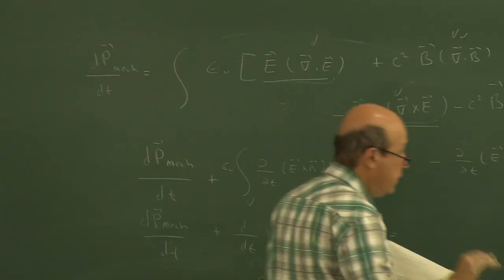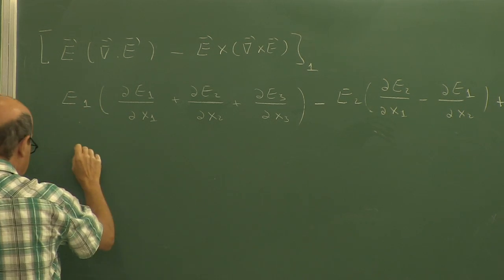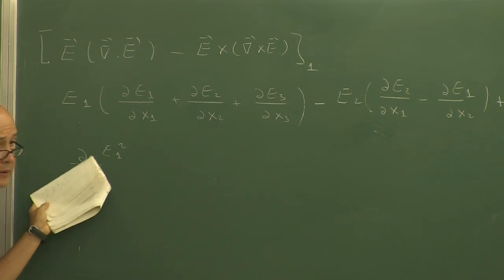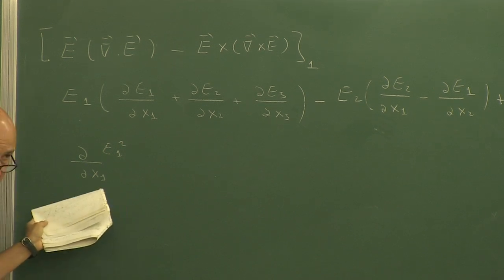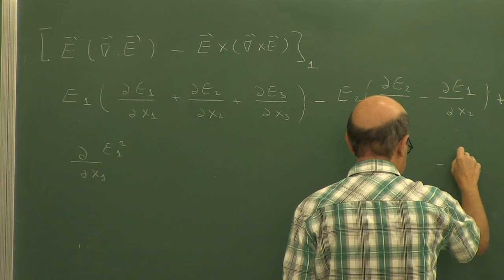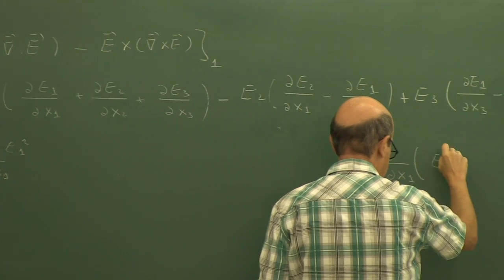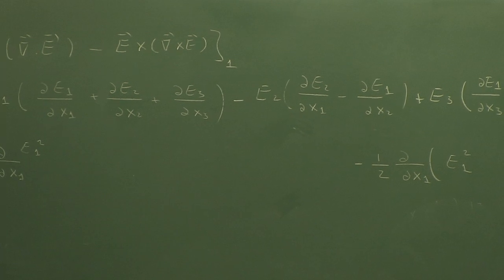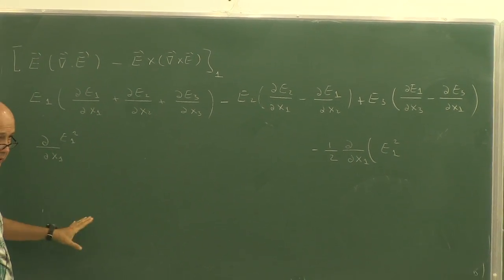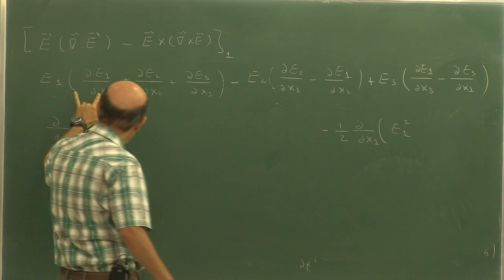If you have that term, you can write del/del x1 of E1 squared, which equals 2 E1 del E1/del x1. But there is only one here, so subtract a half term: minus 1/2 del/del x1 of E1 squared. I am writing it this way because I know what I am going to do. The factor of 2 corresponds to the first term, and 2 divided by one-half gives 1 — that brings us the first term.